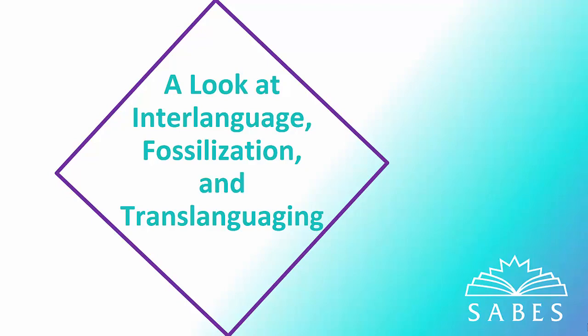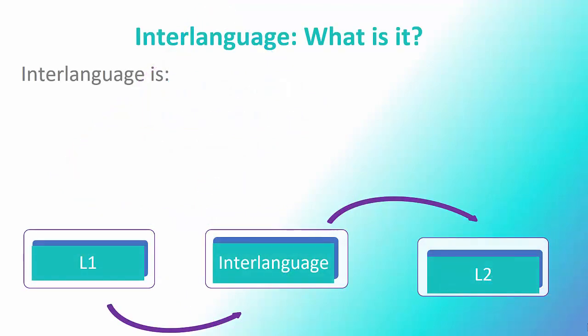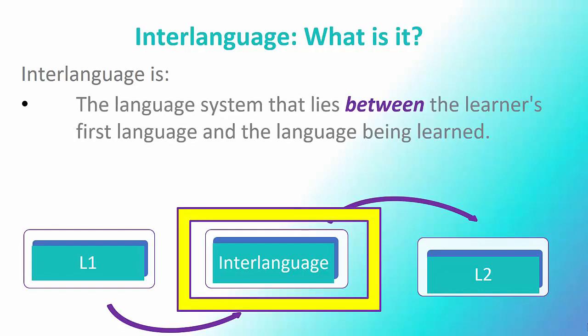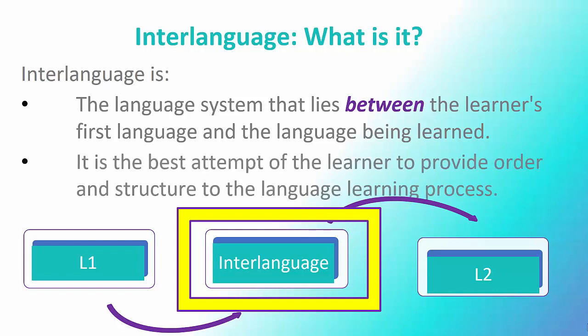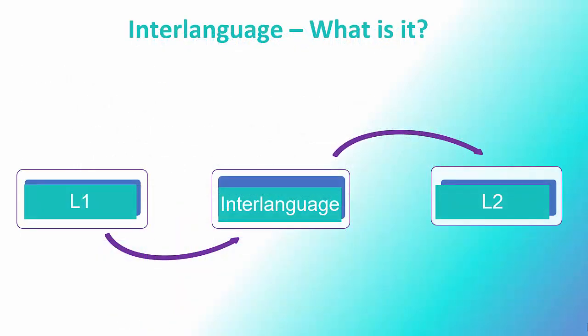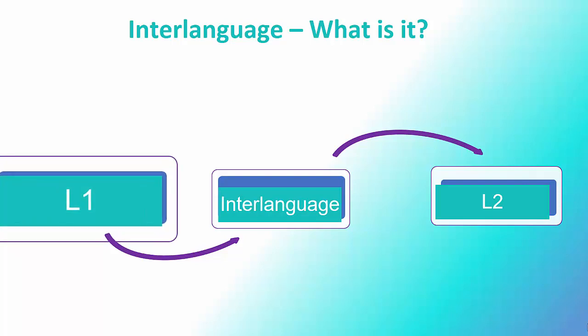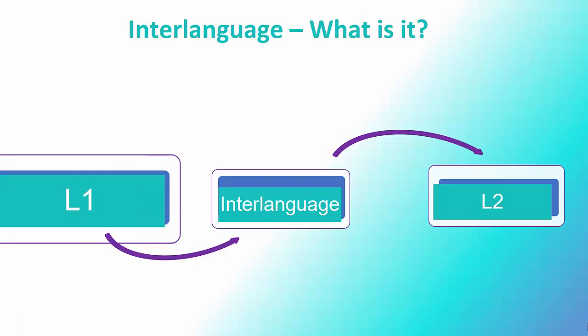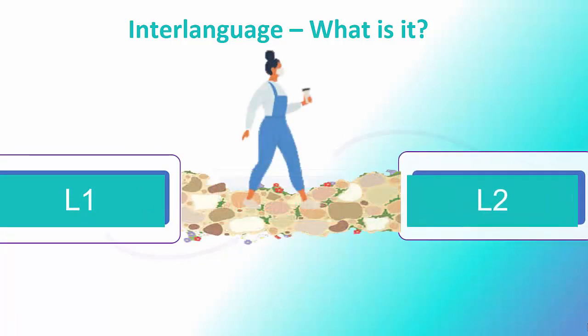Interlanguage is a term coined by Dr. Larry Selinker. It describes the extensive trial and error process that learners go through to slowly succeed in approximating the language systems used by native speakers. Interlanguage lies between the learner's first language and the language being learned, and it is the learner's best attempt to provide order and structure to the language learning process. This interlanguage often preserves some features of their first language and can also overgeneralize some language writing and speaking rules.